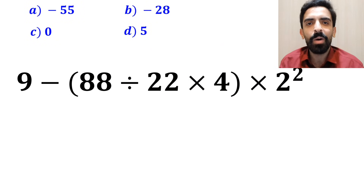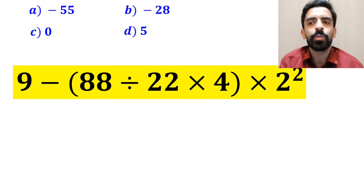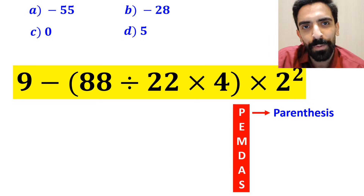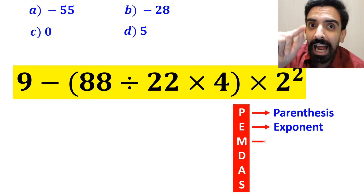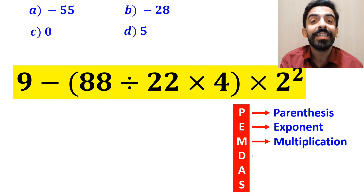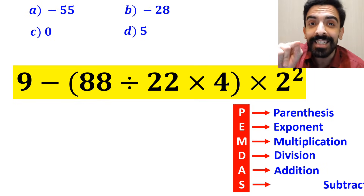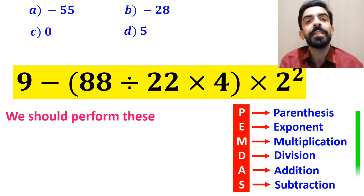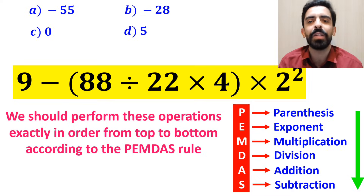Now let me show you how to solve this expression properly. To solve this question, we need to follow the order of operations, which is PEMDAS. In this rule, P stands for parenthesis, E stands for exponent, M stands for multiplication, D stands for division, A stands for addition, and S stands for subtraction. We should perform these operations exactly in order from top to bottom according to the PEMDAS rule.